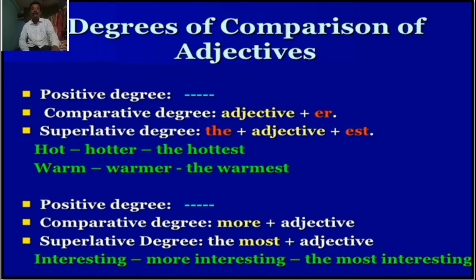Model 1: Positive degree — the adjective base form. Comparative degree — adjective plus ER. Superlative degree — the plus adjective plus EST. For example: Hot — positive form. Hotter — comparative form. The hottest — superlative form. Warm — warmer — the warmest.